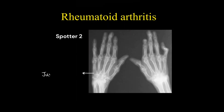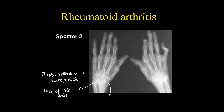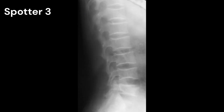In the case of rheumatoid arthritis, there is juxta-articular osteoporosis, and in the carpal bones we can see loss of joint spaces with erosions. Deformities have begun to occur, since this is an early case.